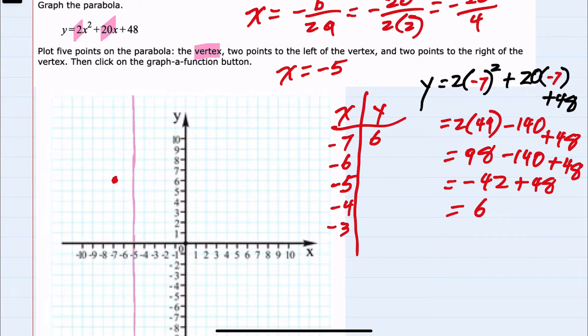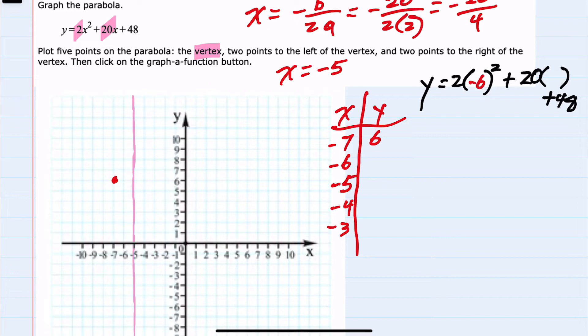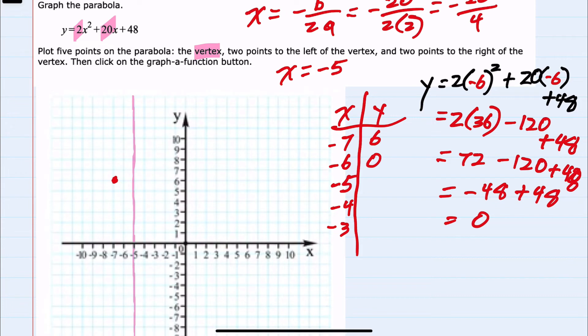Repeating the process now with negative 6, we'll be substituting in a negative 6. We start with 2 times negative 6 squared, which is 36. 20 times negative 6, negative 120 plus 48. This gives us 72 minus 120 plus 48. Doing the subtraction here first, 72 minus 120 gives us negative 48 plus 48, so we have 0 here. Negative 6, 0. That's our second point.